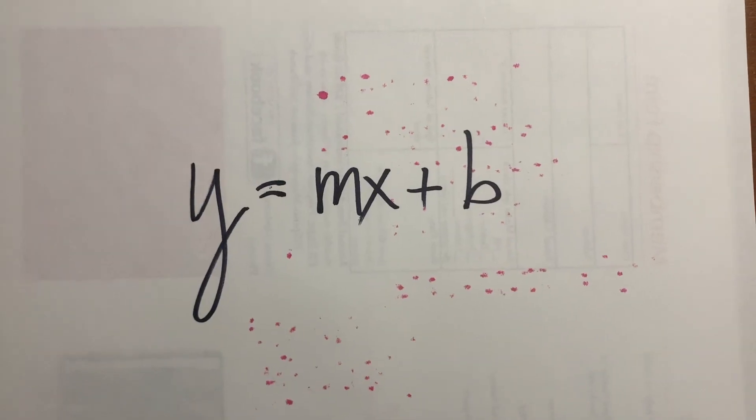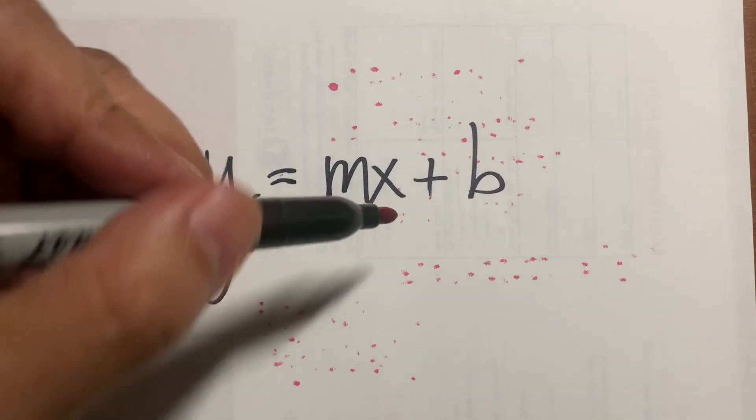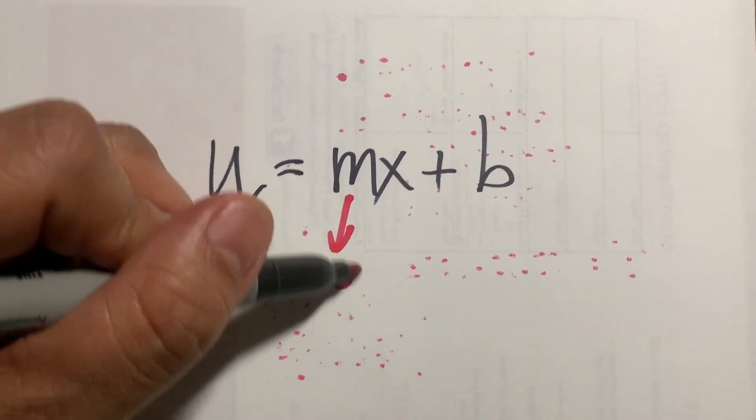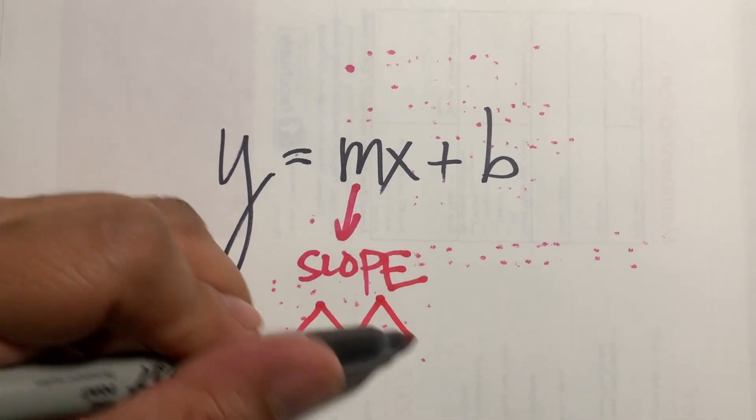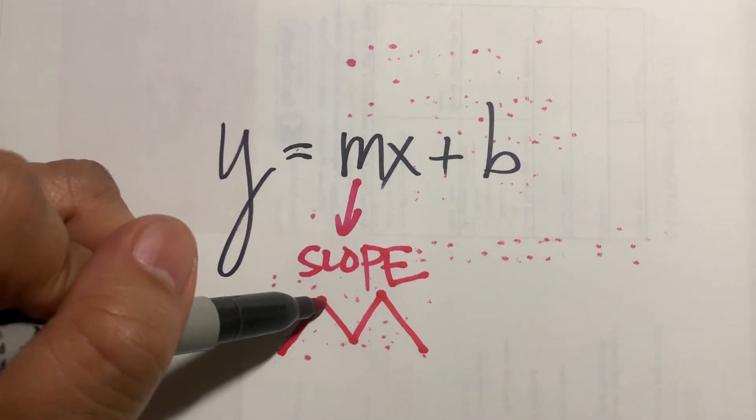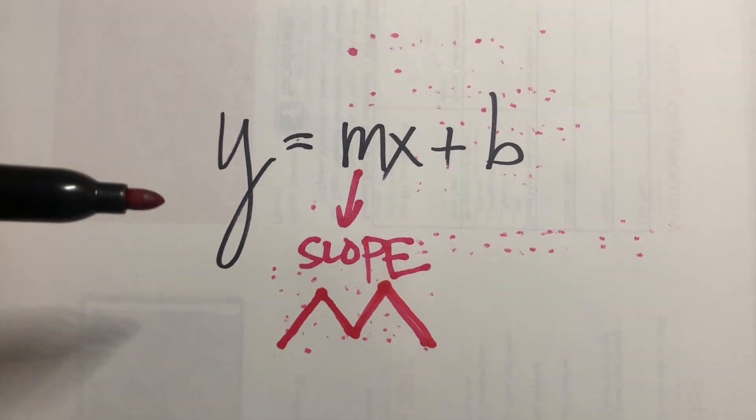The linear equation, Y equals MX plus B. So, what is the M? M is the slope. But, why is slope a letter M? Because the letter M has angles like this, like a mountain. These are the slopes of the mountain.